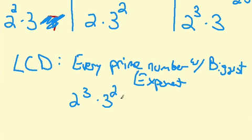2 cubed is 8. 3 squared is 9. 8 times 9 is 72.